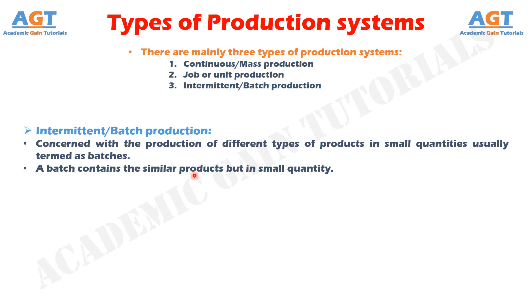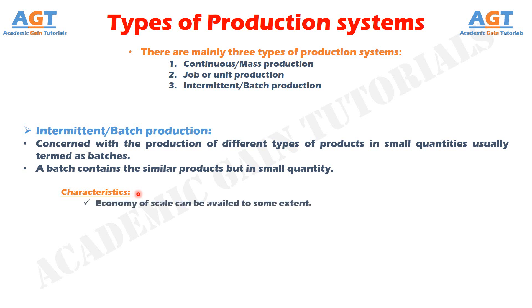Examples of intermittent or batch production include automobile plants, printing presses, and electrical goods plants. What are the characteristics of intermittent or batch production? As the final product is somewhat standard and manufactured in batches, economy of skill can be availed to some extent.